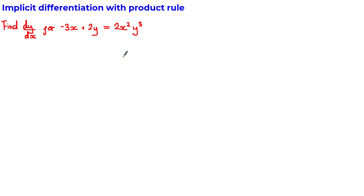In this tutorial, we are going to solve an implicit differentiation problem where we have a function of X and Y which have been multiplied together.